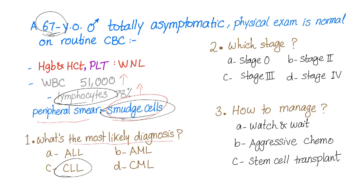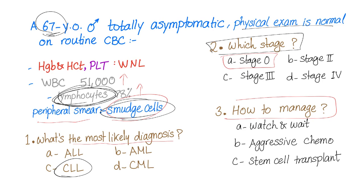Which stage of CLL? Physical exam is normal and we have only lymphocytosis with smudge cells — so this is stage zero. How to manage: watch and wait, aggressive chemo, or stem cell transplant? The answer is watch and wait. She is in stage zero with very good prognosis and very low risk. That's it — I'll see you in the next video. Until next time: be safe, stay happy, and study hard.